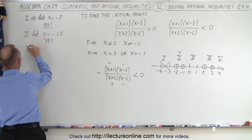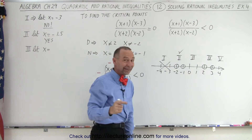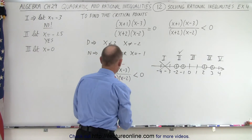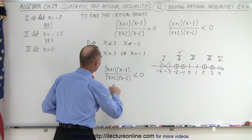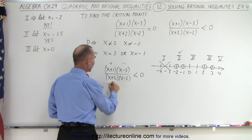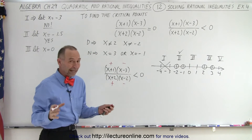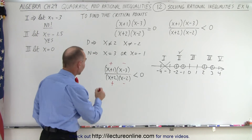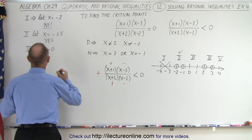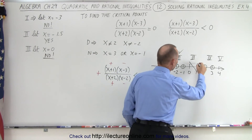For region three, let's pick x = 0. Zero plus one is positive. Zero minus three is negative. Zero plus two is positive. Zero minus two is negative. We have two negatives and two positives. Two negatives multiplied together give a positive, and a positive number cannot be less than zero. So region three does not satisfy the inequality and is not included in the solution.